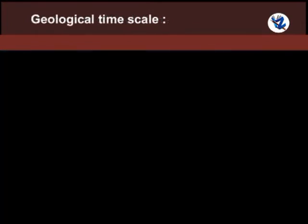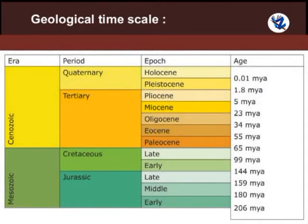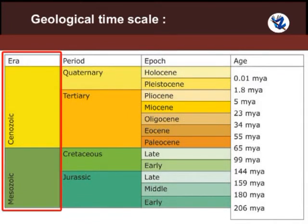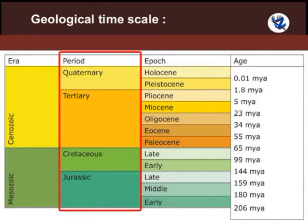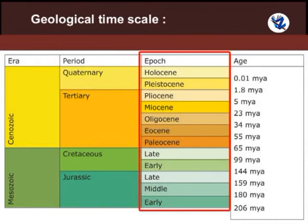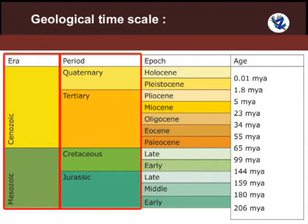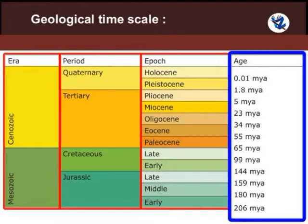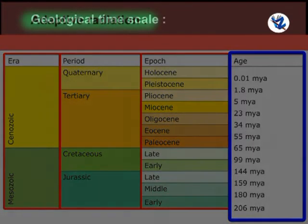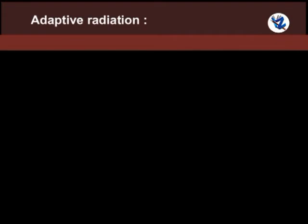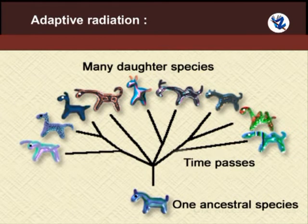Geological time scale: The major divisions of geological time are called eras; the eras are divided into periods and the periods into epochs. The eras, periods and epochs are arranged on the time scale in order of their age. Adaptive radiation: The process of evolution which results in transformation of an original species into many different varieties is called adaptive radiation.